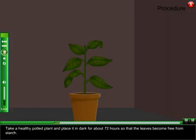Procedure: Take a healthy potted plant and place it in dark for about 72 hours so that the leaves become free from starch.